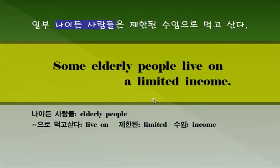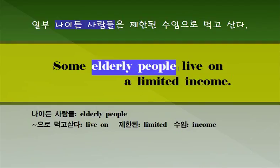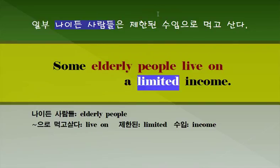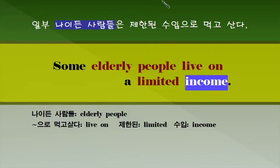이렇게 문장을 쓸 수 있습니다. 주요 표현 다시 한번 확인하세요. 나이 든 사람들: Older people. 먹고 살다: Live on. 제한된: Limited. 그리고 수입은: Income. 주요 표현들 머릿속에 잘 정리해 두시기 바랍니다.